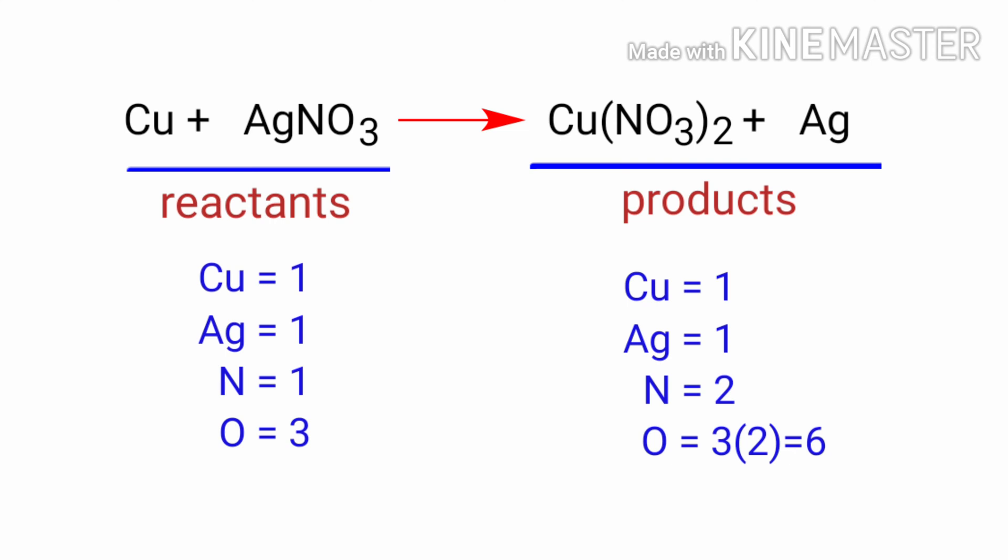In this equation we need to balance the nitrogen atoms first. To do this we need to put a coefficient of two in front of AgNO3.